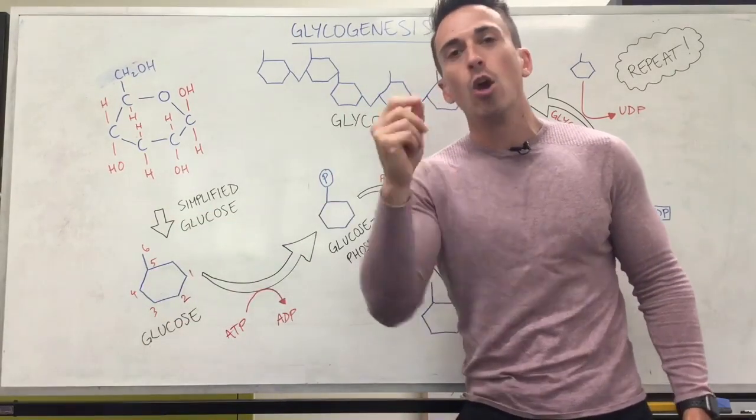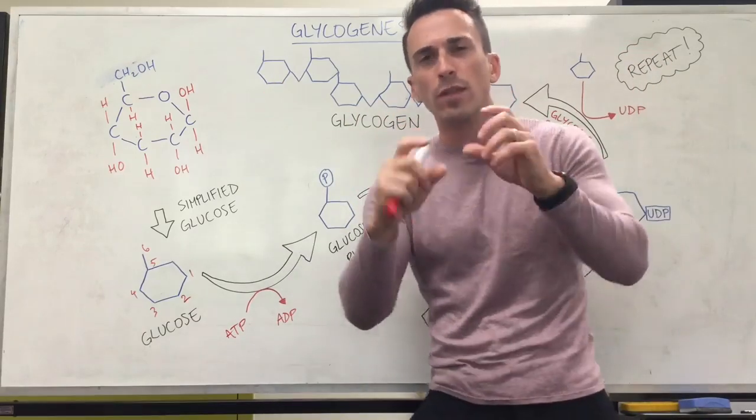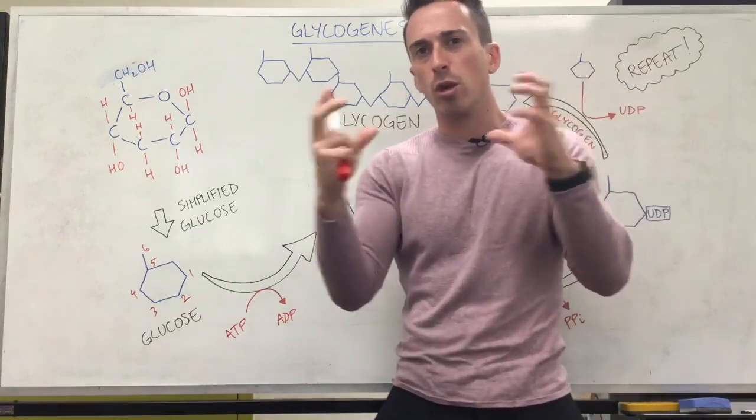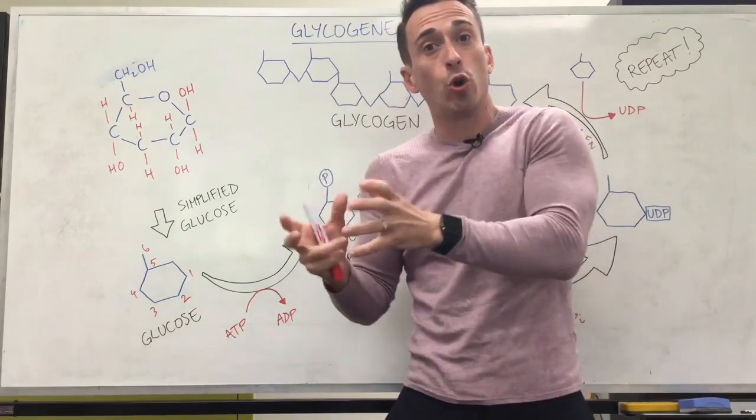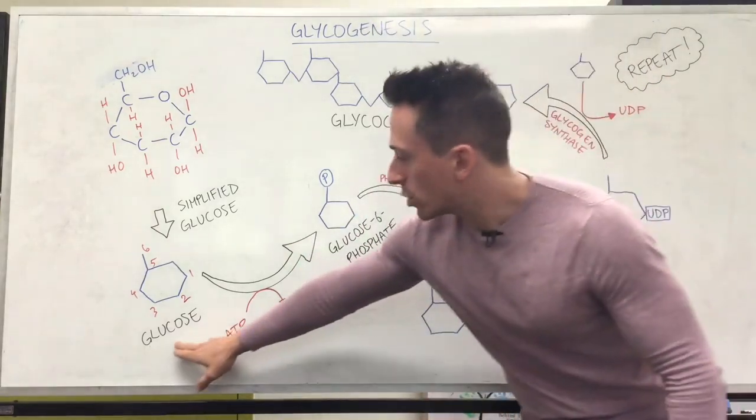This is going to be important because when we create glycogen, all we do is snap together glucose. We have to change it a little bit, but basically we're snapping them together to create this molecule that we can compactly store within the liver or the muscle or the kidney.